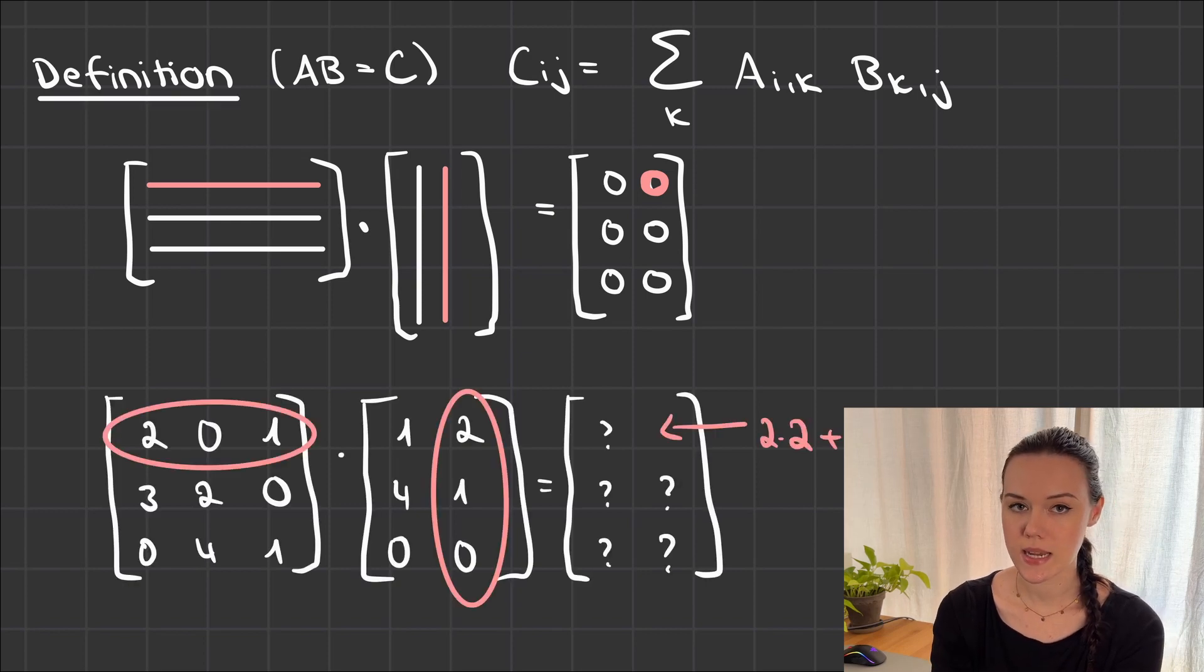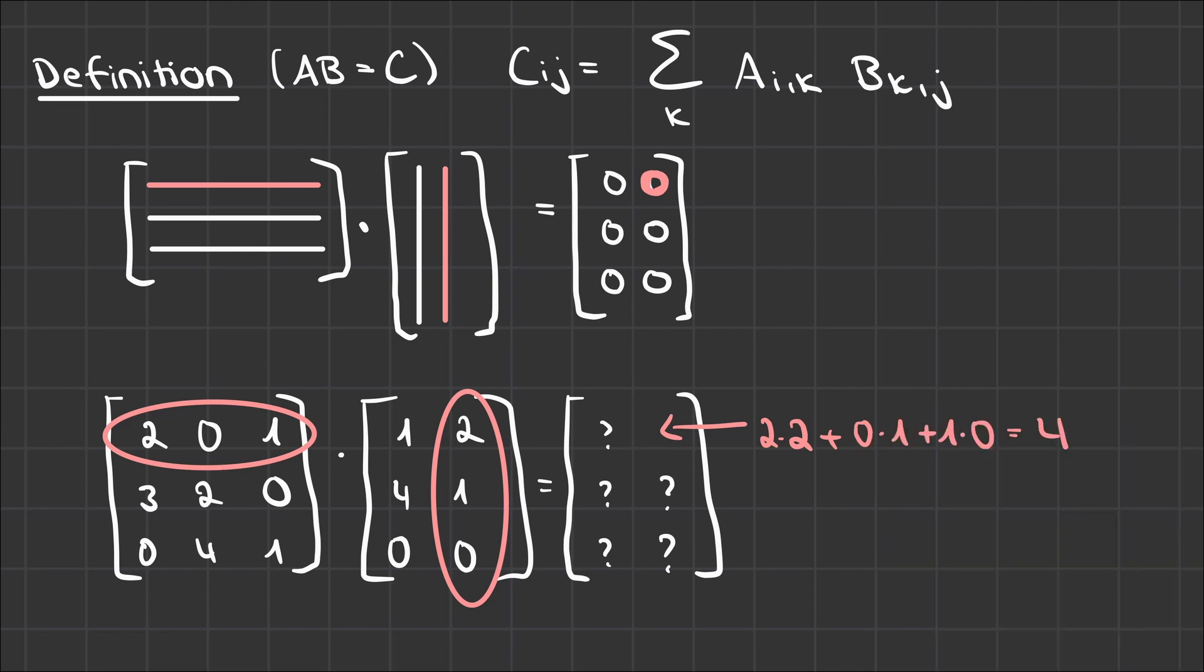Now that we've identified the correct rows and columns, let's look at some numbers. So I have again marked the first row and the second column in those example matrices and the resulting entry in the first row and second column of the result is then 2 by 2, which are the first entries, plus 0 times 1, which are the second entries of each of those, and then plus 1 times 0, which are the last entries of the row or column respectively. And the result of that is simply 4.